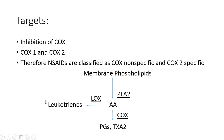Looking at this diagram: membrane phospholipids are broken down into arachidonic acid by an enzyme called phospholipase A2. Arachidonic acid can then be converted into leukotrienes by lipooxygenase, or into prostaglandins and thromboxane A2 by the COX enzyme. NSAIDs work by inhibiting COX, thereby decreasing the synthesis of prostaglandins and thromboxane A2.